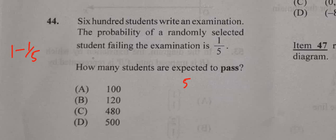And the remaining amount will be those who are expected to pass. One can be converted to five over five, still one. And so, one-fifth from five-fifths will give us four-fifths. So, four-fifths are expected to pass.